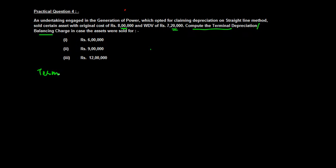Now first let me explain to you what you mean by terminal depreciation. There are normally three things which are involved in any asset: one is the actual cost, second is the written down value, and the third is the sale value.